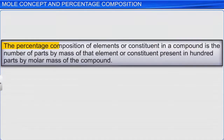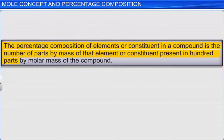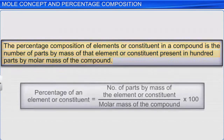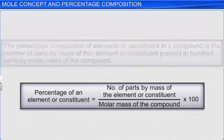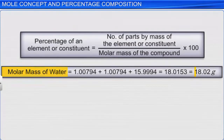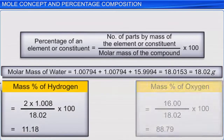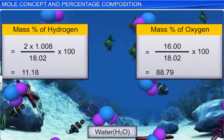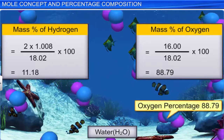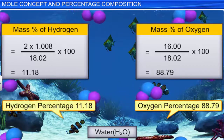Scientists also require to know the percentage of elements present in a compound. This information helps to determine the purity of the chemical compound under observation. The percentage composition of elements or constituents in a compound is the number of parts by mass of that element or constituent present in 100 parts by molar mass of the compound. For example, we know that the molar mass of water is 18.02 grams. We can calculate the percentage of hydrogen and oxygen; the percentage of oxygen and hydrogen in water is 88.79 and 11.18 respectively.